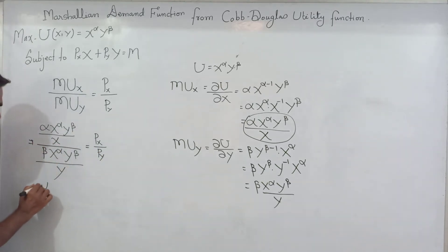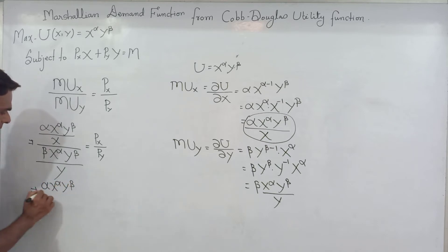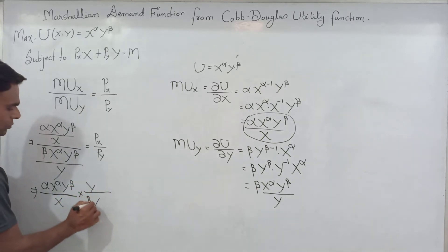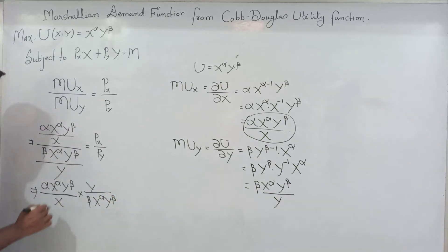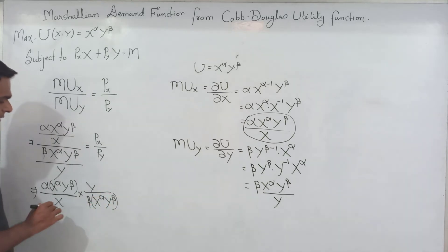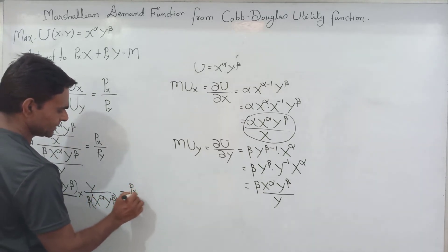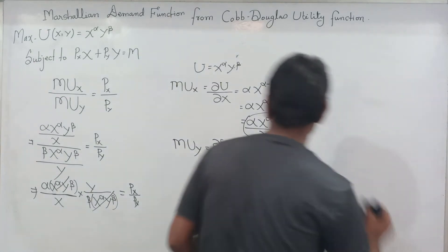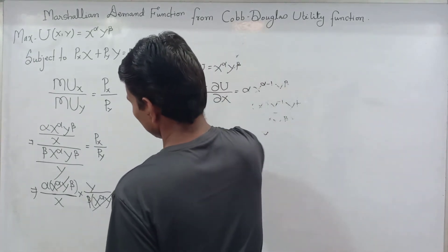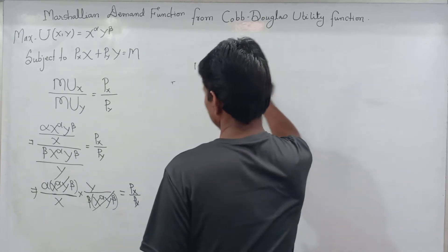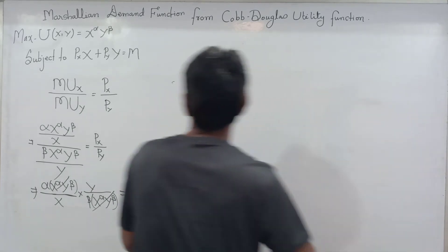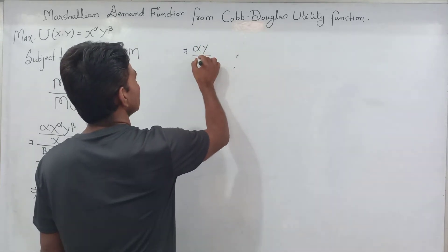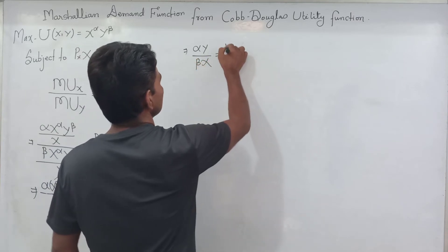Solving this, we write: [alpha times x^alpha times y^beta / x] divided by [beta times x^alpha times y^beta / y], which simplifies by cancellation of common terms, leaving us with alpha times y divided by (x times beta) equal to Px divided by Py.